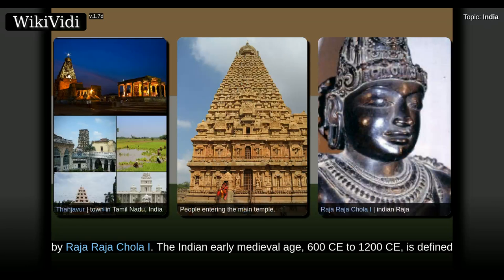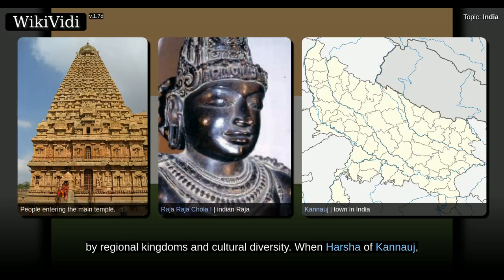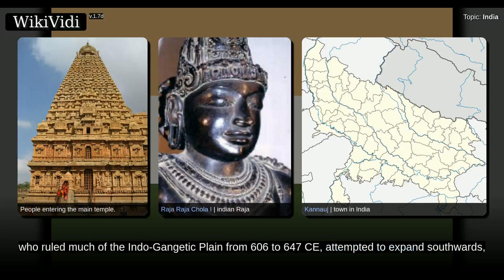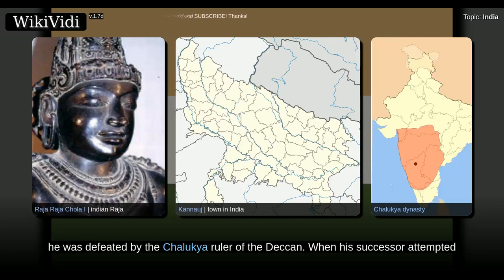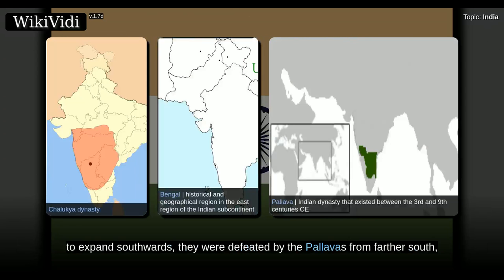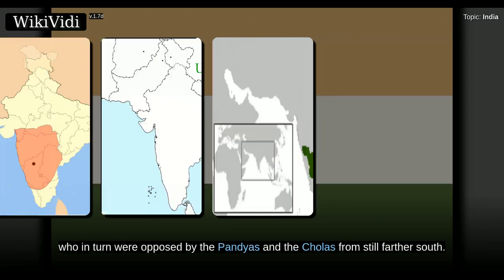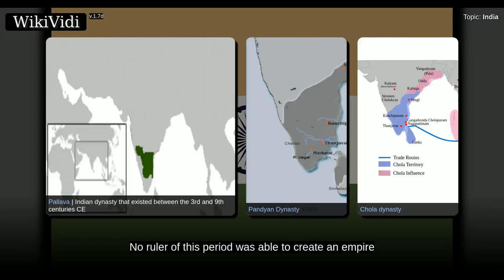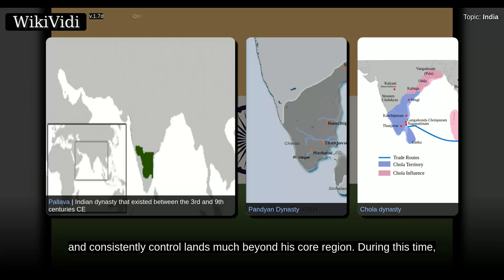The Indian early medieval age, 600 CE to 1200 CE, is defined by regional kingdoms and cultural diversity. When Harsha of Kanauj, who ruled much of the Indo-Gangetic plain from 606 to 647 CE, attempted to expand southwards, he was defeated by the Chalukyas ruler of the Deccan. When his successor attempted to expand eastwards, he was defeated by the Pala king of Bengal. When the Chalukyas attempted to expand southwards, they were defeated by the Pallavas from farther south, who in turn were opposed by the Pandyas and the Cholas from still farther south. No ruler of this period was able to create an empire and consistently control lands much beyond his core region.